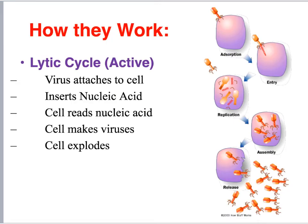There are a couple of different ways that viruses affect cells. There is a lytic cycle, which is active — this happens immediately. The virus attaches itself to a host cell, injects its nucleic acid and information, and the cell interprets that nucleic acid as its own and makes the viruses. Then the cell explodes and the viruses are spread throughout the body.